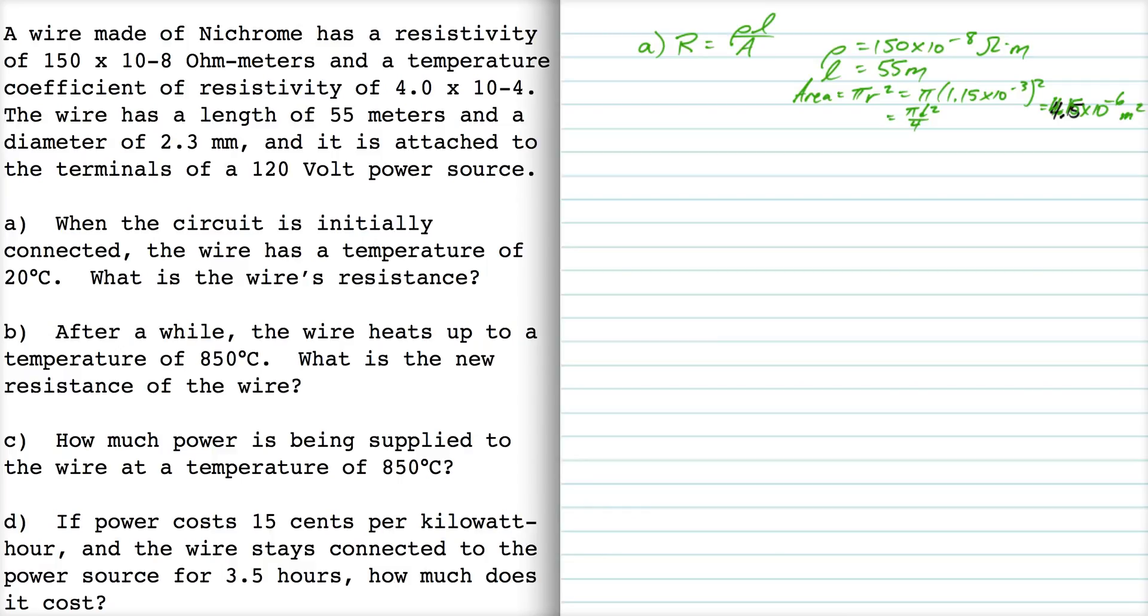So if I plug each of those quantities in, then I get a resistance of 19.86 ohms. I'm given two sig figs in the problem, so I'm going to round it off to 20 ohms.